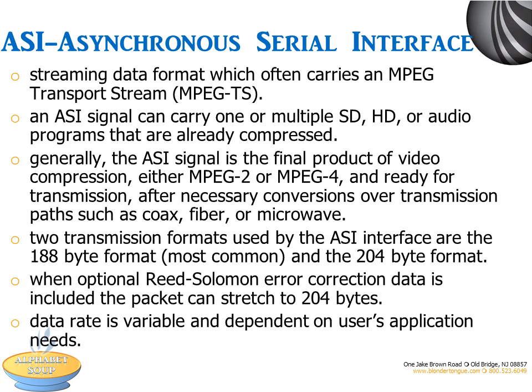ASI can carry one or multiple compressed SD, HD, or audio programs. There are two transmission formats: the 188-byte format, which is most common, and the 204-byte format, when optional Reed-Solomon error correction data is included. The data rate is variable and is dependent on the application.